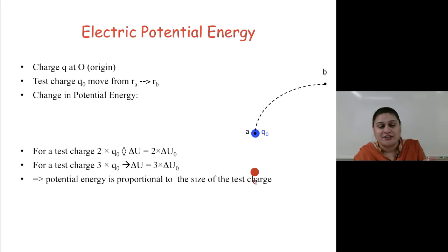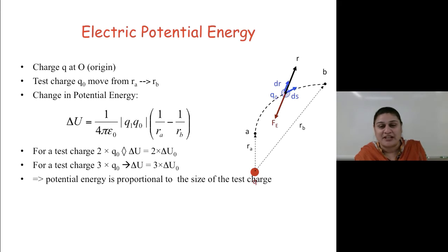A charge Q at origin and a test charge moves from R1 to Rv, then the change in potential energy for this particular scenario is going to be given by delta U equals 1 over 4 pi epsilon naught, Q1, Q2, 1 over Ra minus 1 over Rv. For a test charge 2 times Q1, delta U will be given by 2 times delta U. For a test charge 3, it will be given by 3 times Q naught, which is 3 times the potential. The potential energy is proportional to the size of the test charge.